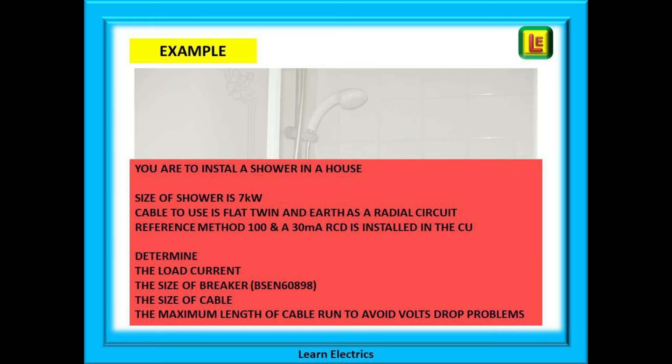We need to calculate the design or load current, then decide the size of breaker to use — we will use a standard BS EN 60898 breaker type B. Having done that we can select the correct size cable from the appropriate tables, and then determine the maximum length of cable run to ensure we do not exceed it.